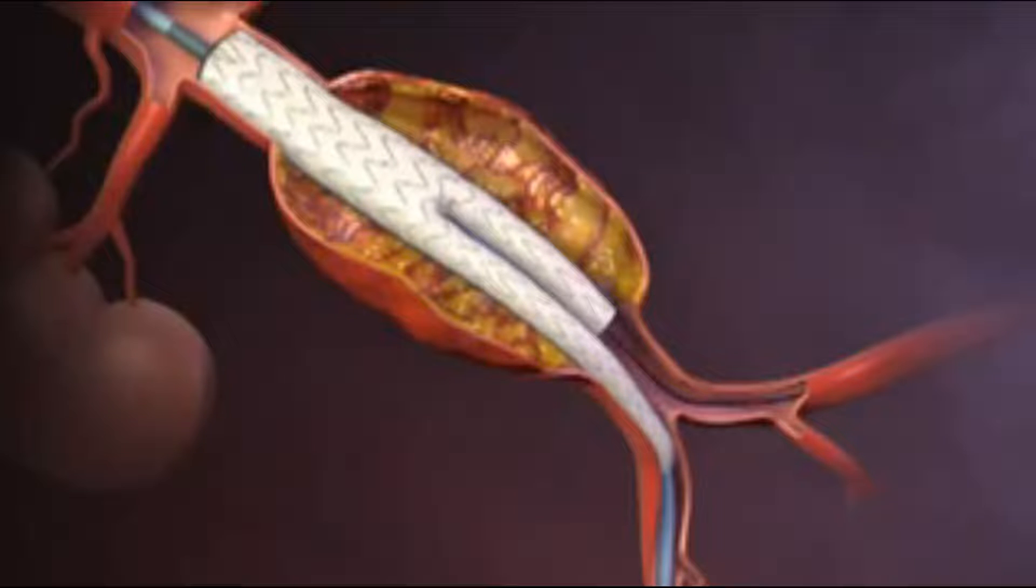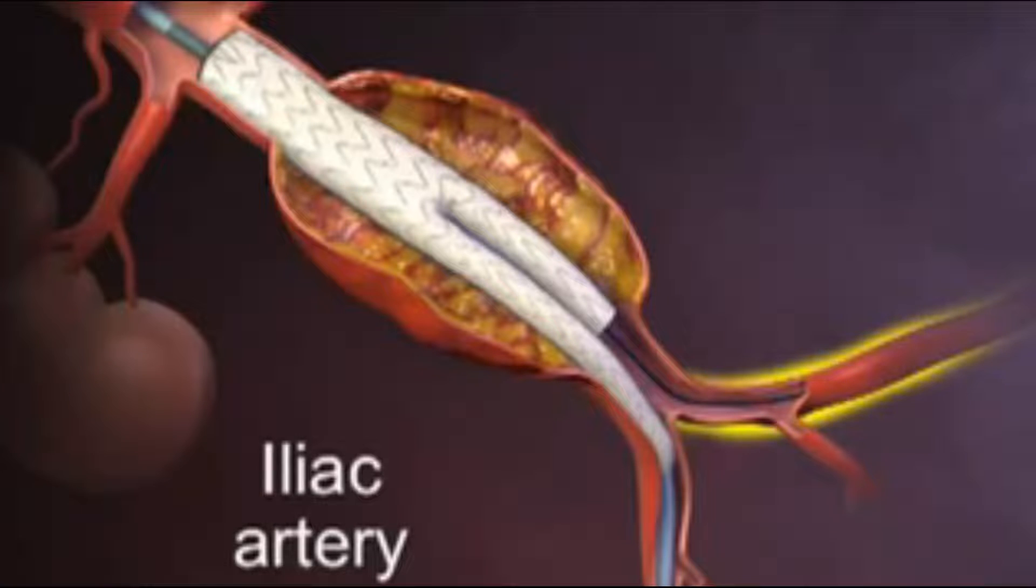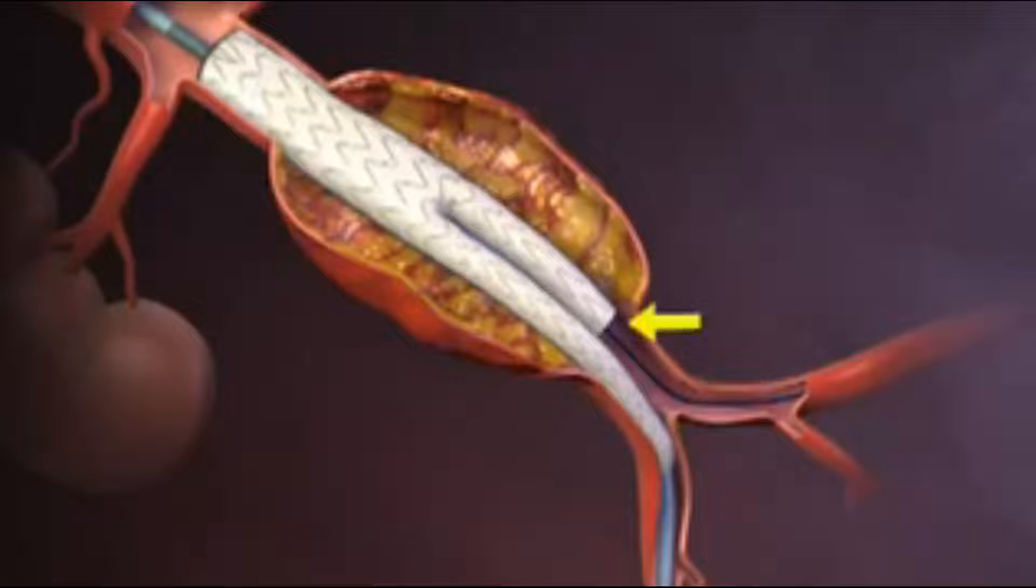A second guide wire is introduced through the contralateral iliac artery into the open lumen of the contralateral limb of the stent graft.